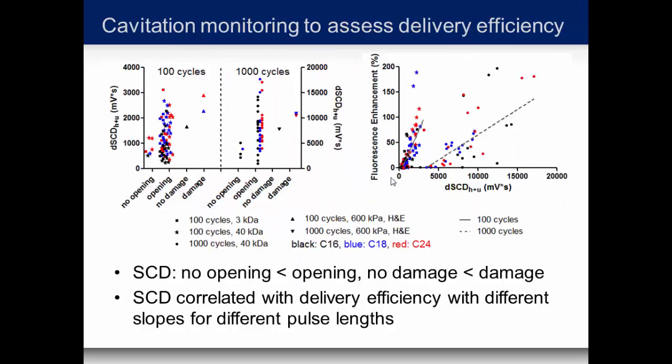For assessing delivery efficiency, we looked at the stable cavitation dose for harmonics and ultraharmonics, with four different outcome cases: no opening, opening with no damage, opening with damage, and damage with no opening. Most cases at 100 and 1000 cycles fall in the opening categories, with a few no-opening and a couple of damage cases. Plotting fluorescence enhancement against stable cavitation dose, we see two distinct slopes — 100 cycles differs from 1000 cycles — indicating that fluorescence enhancement requires lower stable cavitation dose at 100 cycles compared to 1000 cycles.